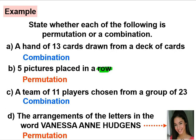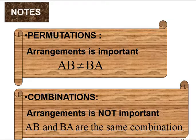So the conclusion is for permutations arrangement is important, AB is not equal to BA. But for combinations arrangement is not important, AB and BA are the same combinations.